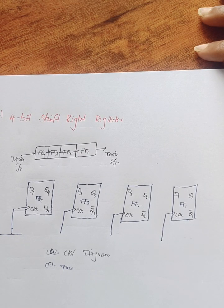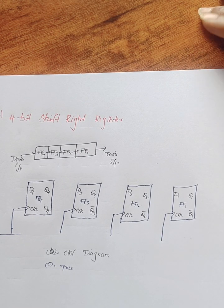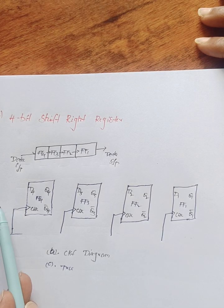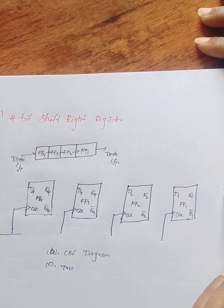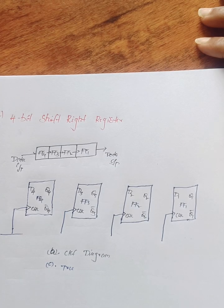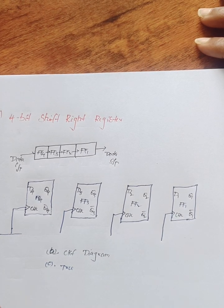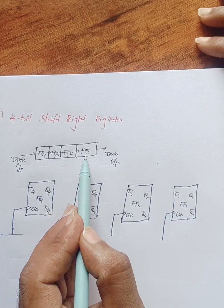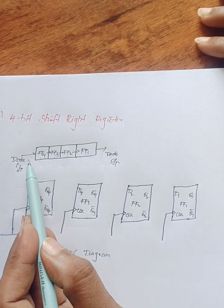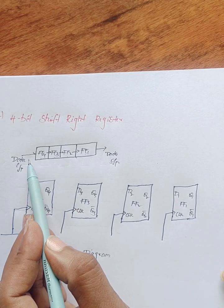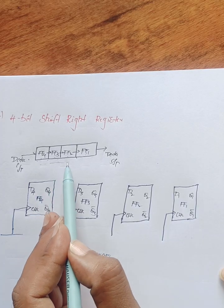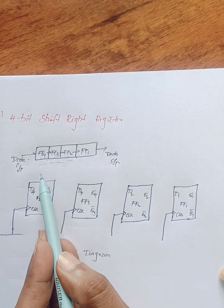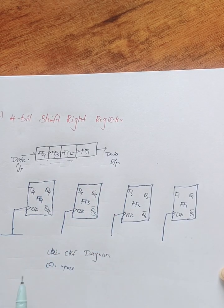The next topic is the 4-bit shift right register. Shift right means data starts at the left side and moves towards the right side — that is called a 4-bit shift right register. Four bits means we require four flip-flops. Data starts at the left side and moves towards the right side — that is called the shift right process.